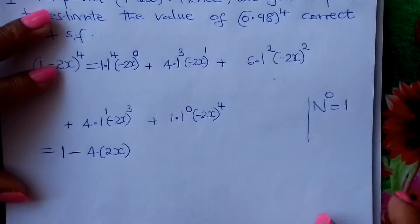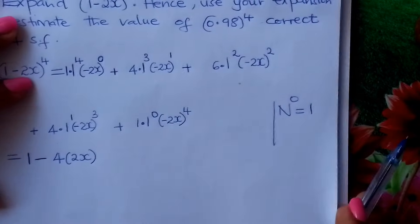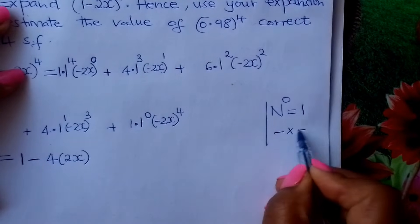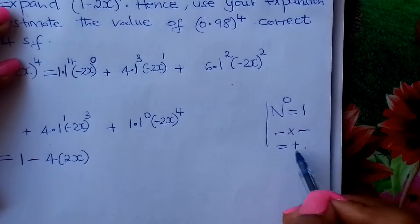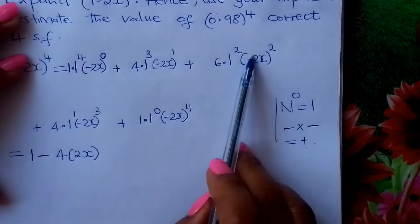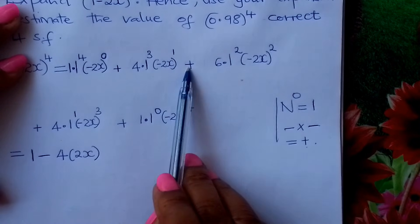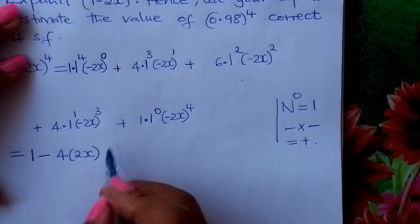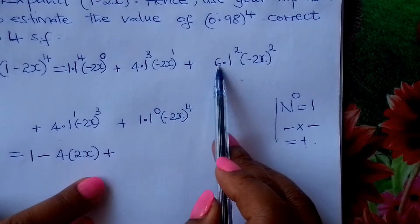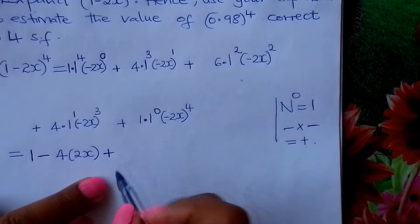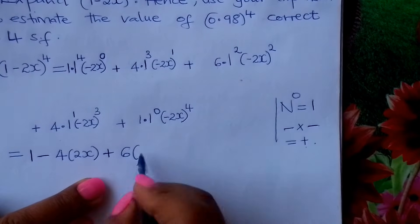For the third term, we deal with the negative squared. Negative times negative gives us positive, so negative squared is positive. The whole term is therefore positive. This gives us plus 6 times 1, which is 6, and then (2x) squared.